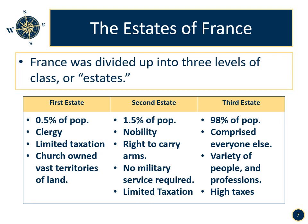The third estate — 98% of the population — comprised everyone else, from the poor to lawyers, doctors, shop owners, and skilled and unskilled workers. They paid very high taxes.